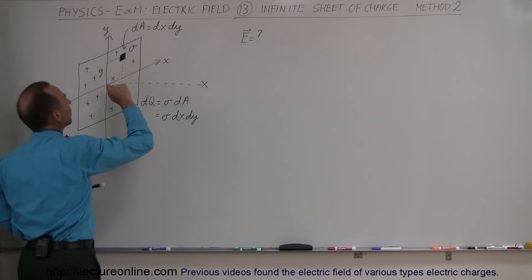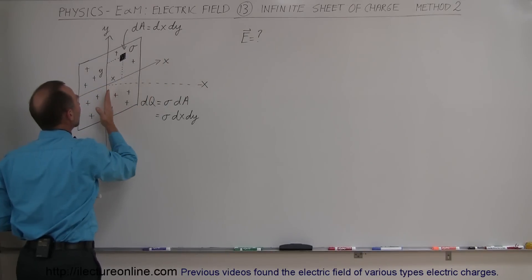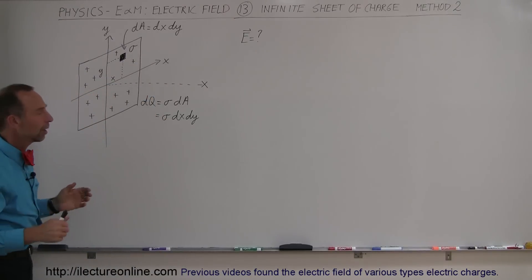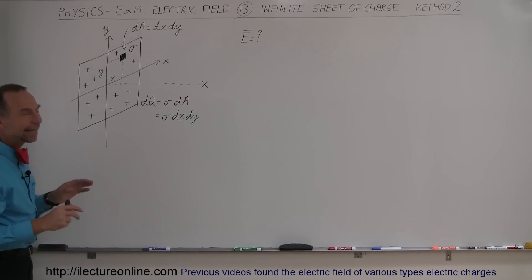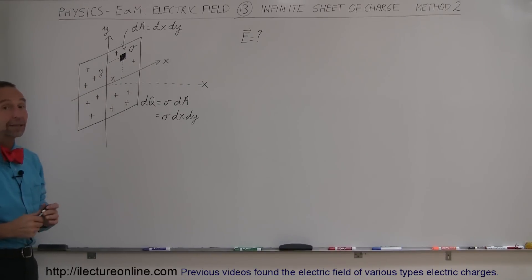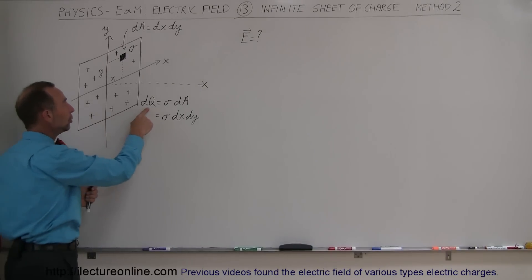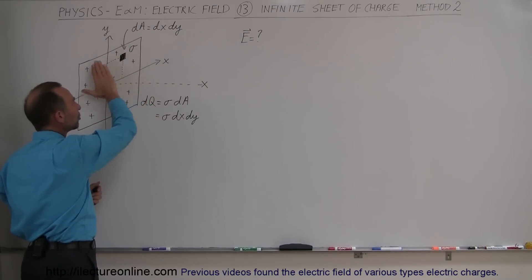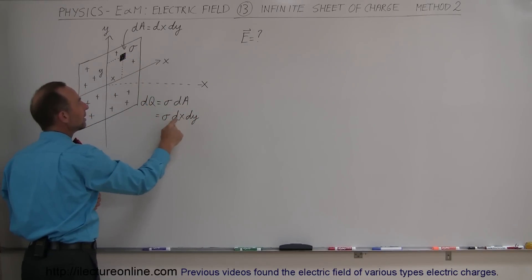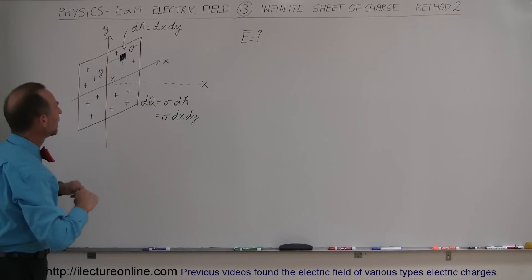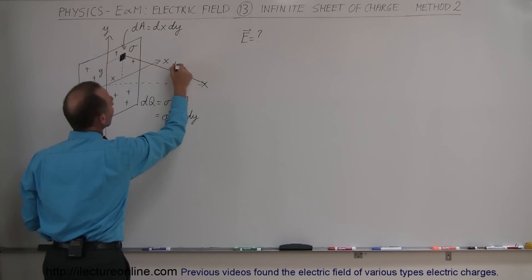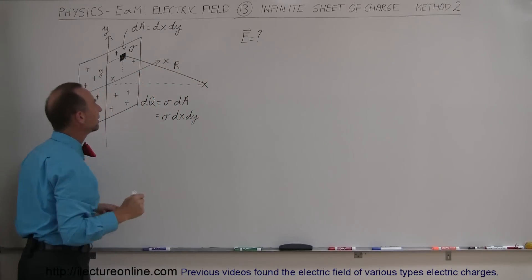The width is dx and the height is dy. I'm assuming the positive x direction to the right, positive y direction upward, and the positive z direction out away from the sheet of charge. The small amount of charge dQ on the element will be the charge density sigma times dA, which is dx times dy. We then draw a line from that element directly to the point of interest, and that will be the distance r away from the element dQ.